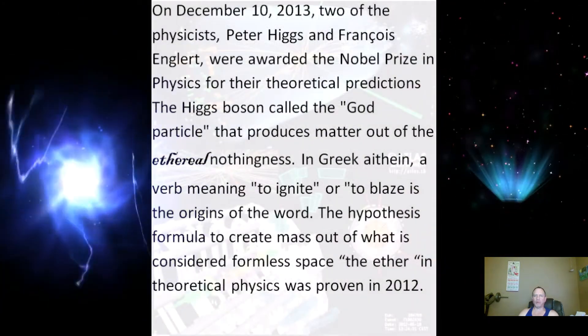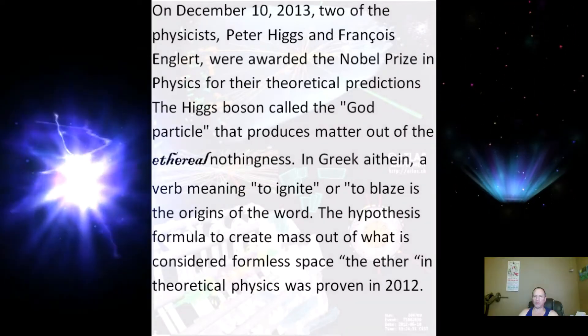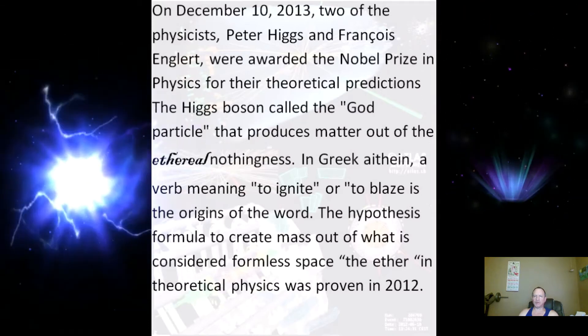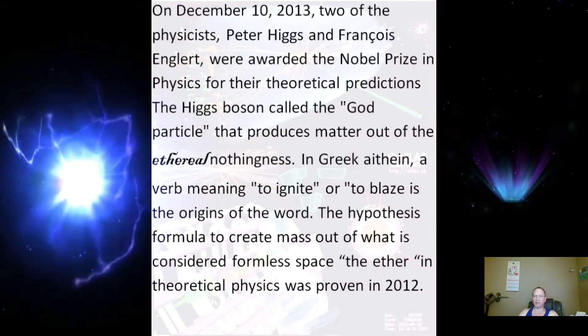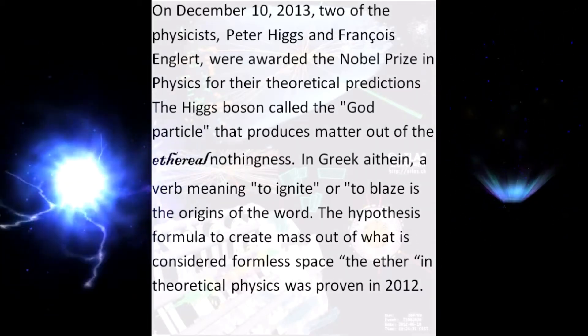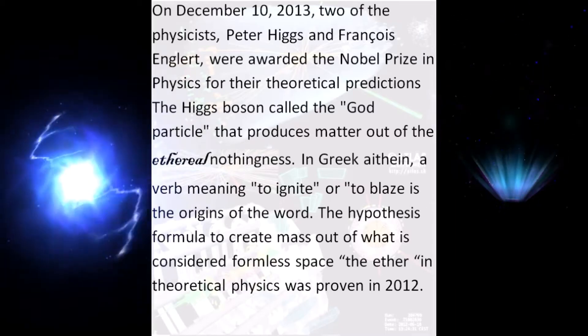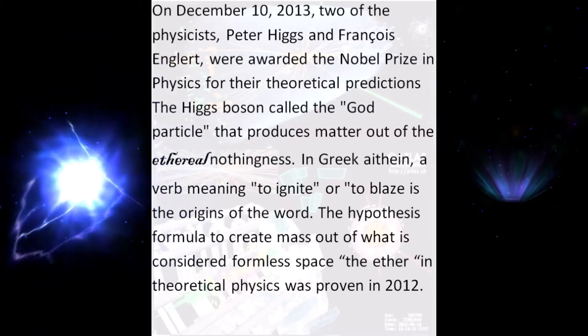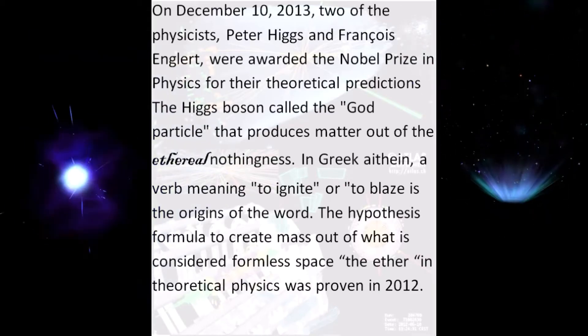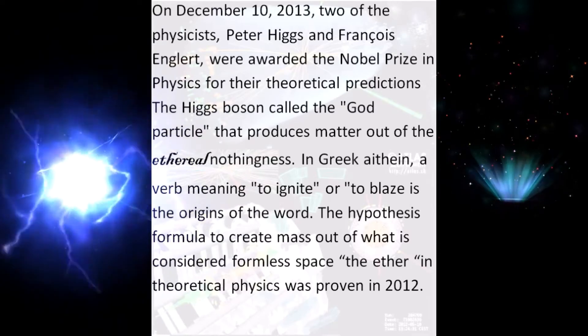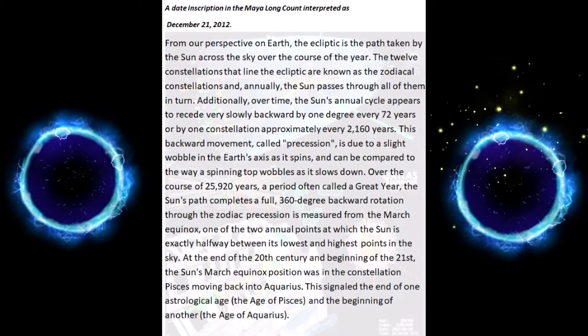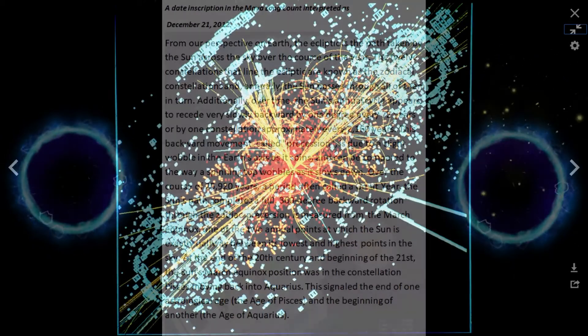On December 10, 2013, two of the physicists, Peter Higgs and Francois Englert, were awarded the Nobel Prize in Physics for their theoretical predictions the Higgs boson called the God particle that produces matter out of the ethereal nothingness. In Greek ethane, a verb meaning to ignite or to blaze is the origins of the word. The hypothesis formula to create mass out of what is considered formless space the ether in theoretical physics was proven in 2012. A date inscription in the Mayan long count interpreted as December 21, 2012.